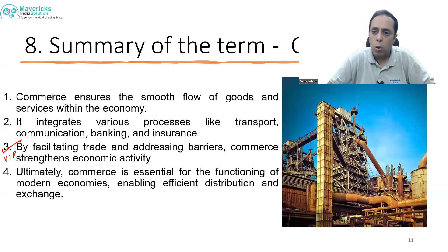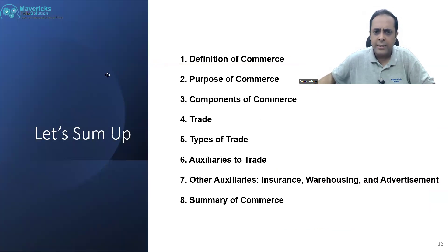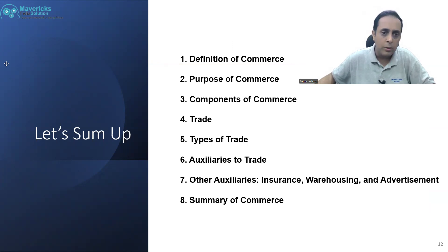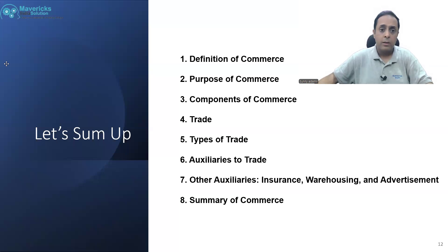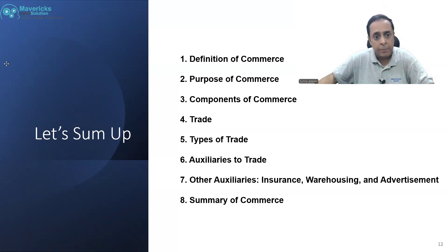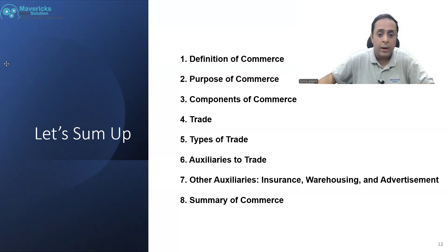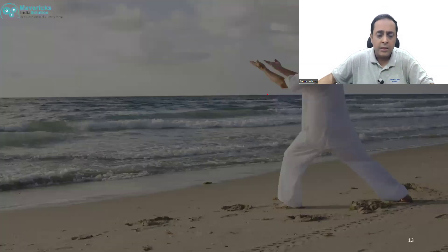This is all from today's class where we covered eight points in a simple and easy way: definition of commerce and how it originated in the 15th century from 'com' and 'mercs'; the purpose of commerce to run economies efficiently; components of commerce — trade and its types; auxiliaries to trade; and other auxiliaries including insurance, warehousing and advertisement; and the summary of commerce.